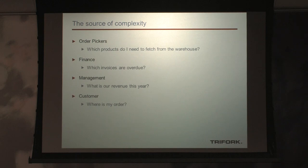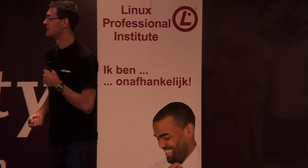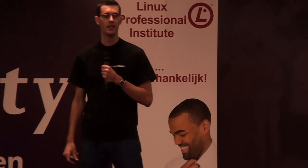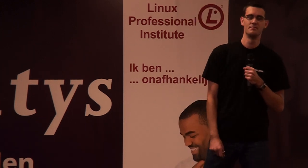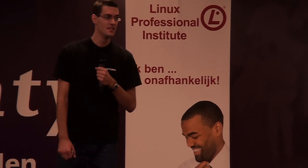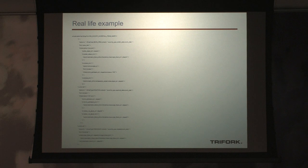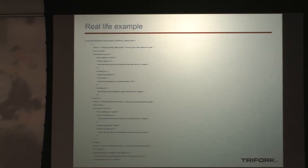The domain model doesn't really help us there. We also have different people — different audiences — needing different types of information. Order pickers need to know where to grab each article quickly. Finance wants to know which invoices are overdue. Management wants last year's revenue. The customer wants to know where their order is. This is all theory — let's go to a practical example.